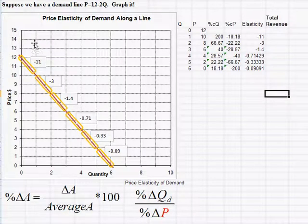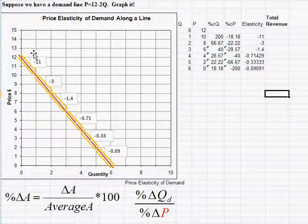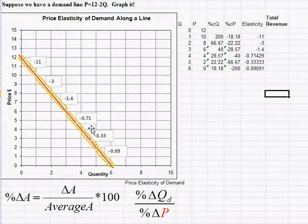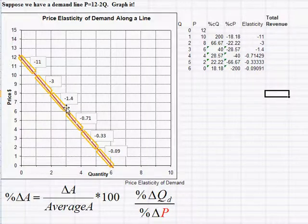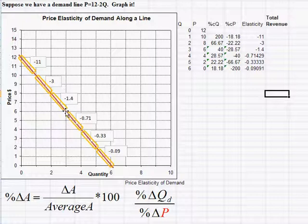If the demand curve is curved rather than straight, this pattern won't necessarily hold — there are curves where elasticity is the same everywhere, which I'll show in a more advanced lecture. But for a straight-line demand curve, elasticity is always very elastic at the top, inelastic at the bottom, and unit elastic in the middle. The elasticity equals exactly -1 at a price of $6 and a quantity of 3 — exactly halfway down the curve from the y-intercept of $12.